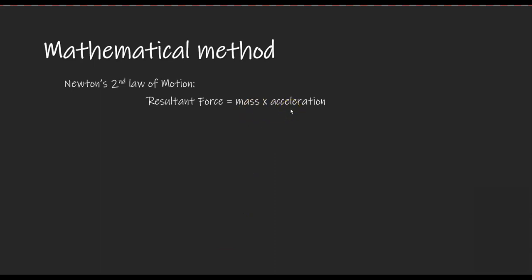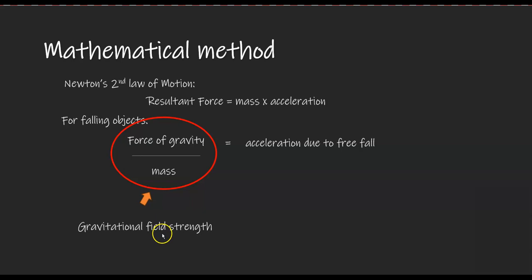So, for falling objects, this means that the force of gravity acting on the object is equal to mass times acceleration due to free fall. Rearranging this equation, the left-hand side is effectively the force of gravity acting per unit mass which is the gravitational field strength. Hence, the gravitational field strength will always be equal to the acceleration due to free fall.